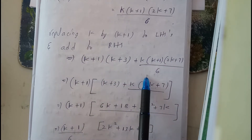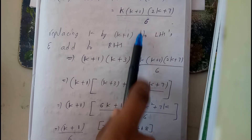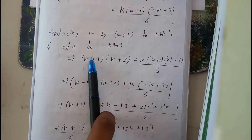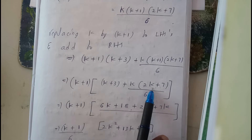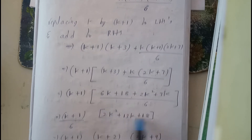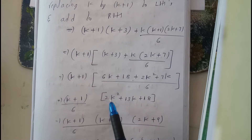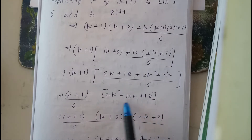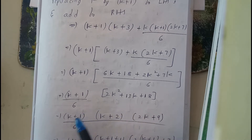Now solve this equation until you get the RHS in terms of k+1. Taking (k+1) as common: (k+1)[(k+3) + k(2k+7)/6]. Taking LCM and further solving — taking 6 in the denominator — we get 2k² + 13k + 18.